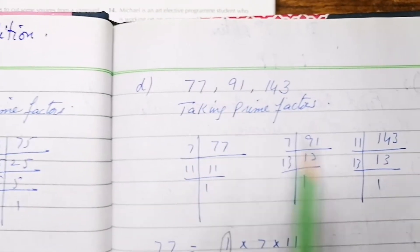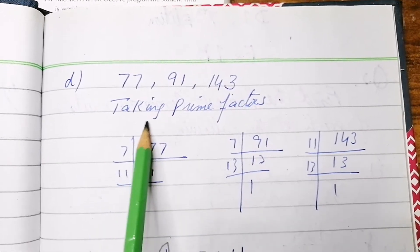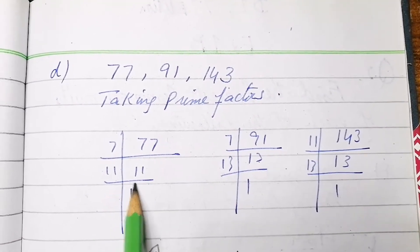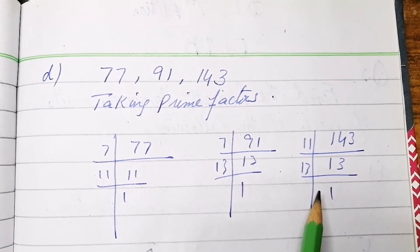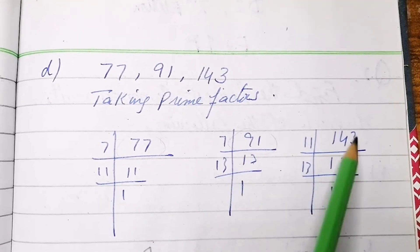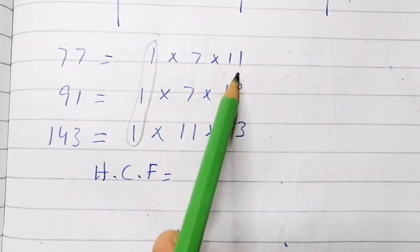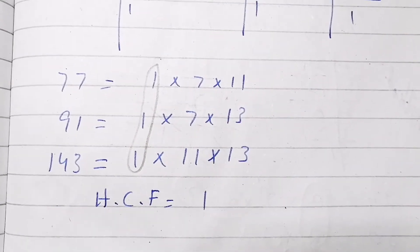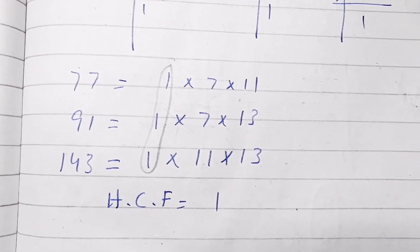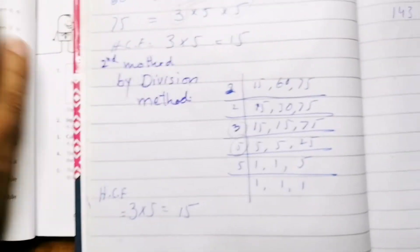For part D, 77, 91, and 143 are given. We take the prime factors of each number separately. Only 1 is common among all three numbers, so the HCF = 1.